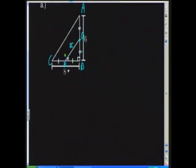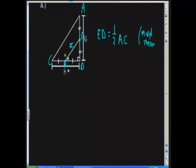So D is the midpoint of AB, and E is the midpoint of BC. Now, since we know that D is the midpoint of AB and E is the midpoint of BC — because that's given — we can say therefore ED must be equal to a half of AC. Remember, with geometry it's very important when you set out your proof to give a reason. So the reason ED equals half AC is because of the midpoint theorem.